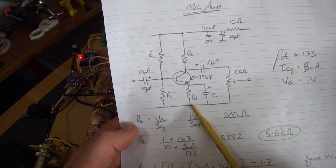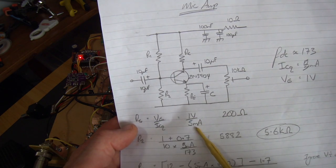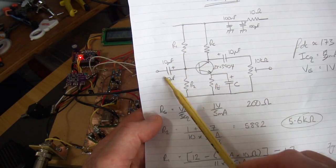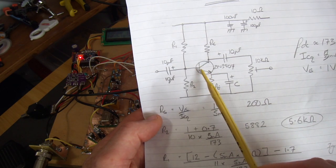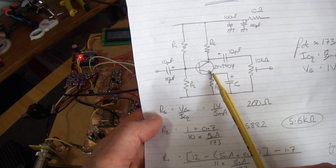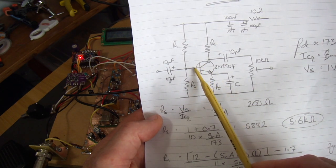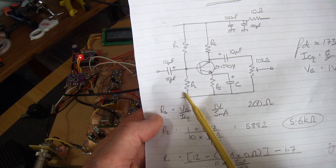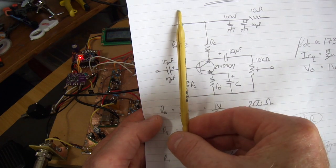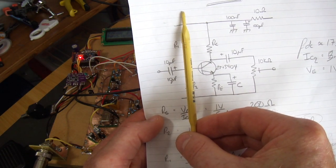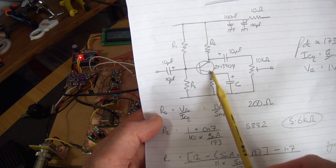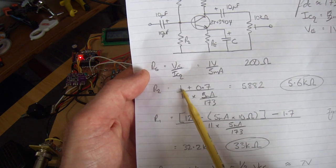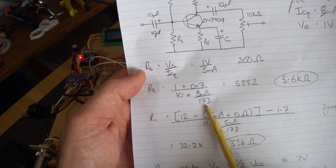Based on that, we can work out what our DC biasing resistors are going to be. So RE, 1 volt there and 0 volts there because it's ground. Ohm's law, 1 volt divided by 5mA is 200 ohms. R2 and R1, the voltage at this point is 0.7 volts greater than the emitter, so 1 plus 0.7 equals 1.7. So 1.7 volts divided by the current flowing through here will give us R2. We want at least 10 times the base current flowing through that circuit.